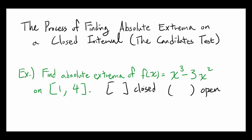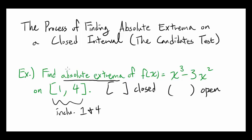The difference between a closed interval and an open interval is that the closed one includes the endpoints. So in this case, we are including 1 and 4 and everything in between. Now we want to find absolute extrema, which is the highest possible value and the lowest possible value of a function output.